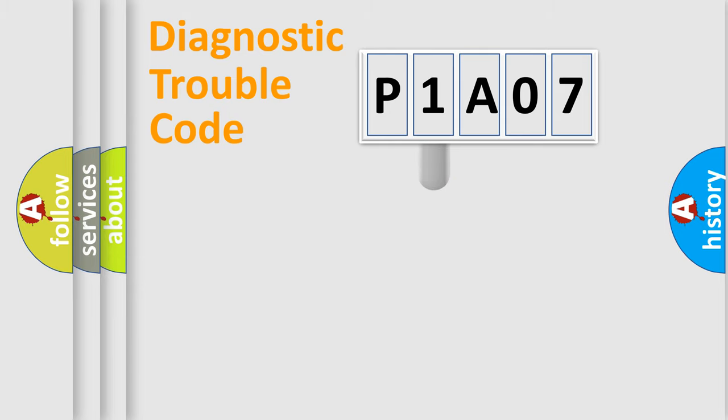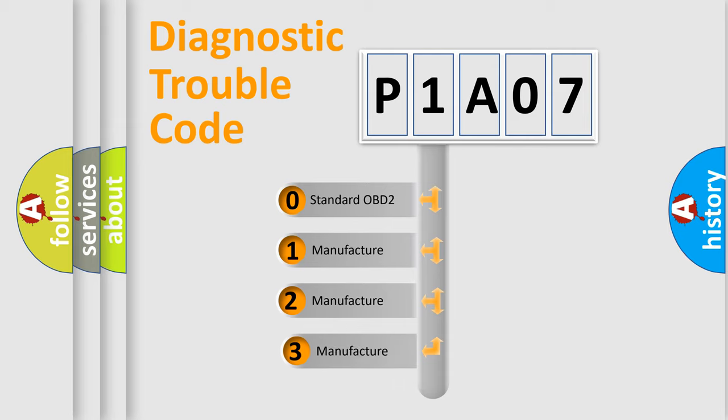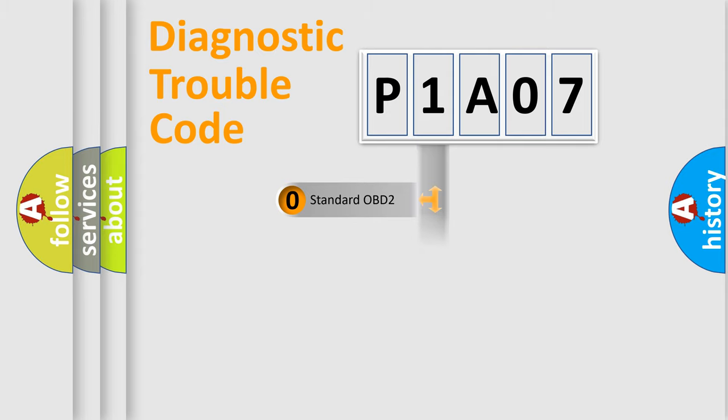If the second character is expressed as zero, it is a standardized error. In the case of numbers 1, 2, 3, it is a manufacturer-specific error expression.